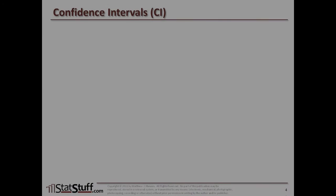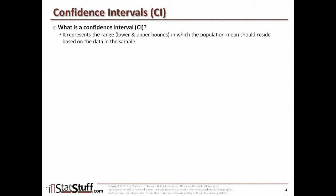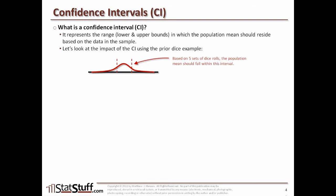Now let's talk about how we can measure that confidence using confidence intervals. A confidence interval represents the range — that is, the lower and upper bounds — in which the population mean should reside based on the data we're looking at. Using the dice example, if we roll the dice five different times and record those averages, the dotted lines on each side represent our confidence interval. After rolling it five times, our average might be the central tendency where the hump is in our distribution, and we're 95% confident that the population average will fall somewhere within this range.